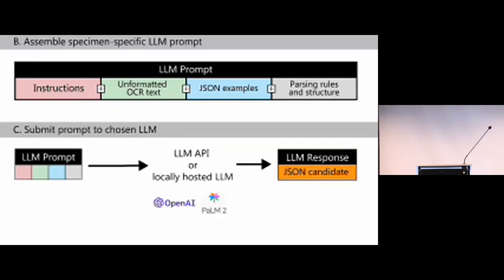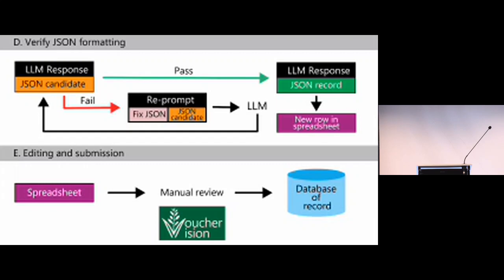Once we've assembled our dynamic prompt, we submit it to our API or locally hosted large language model, and that returns a response—a JSON candidate. Sometimes these large language models are not accurate at returning a specific JSON object, so we have to validate the procedure. If it passes, we have a complete row in our spreadsheet. If it fails, we can do recursive prompting and have the large language model correct the error. After that, the model will process several hundred images—we usually process 500 images at a time—creating a spreadsheet we can submit for manual review before entering it into the database.